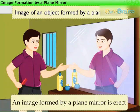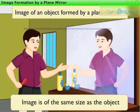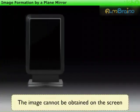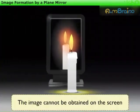An image formed by a plane mirror is erect. It is of the same size as the object. The image appears at the same distance behind the mirror as the object in front of it, and it cannot be obtained on the screen.